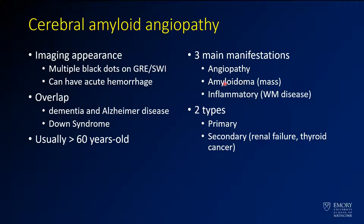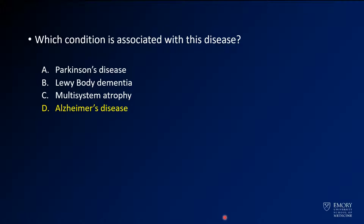You can sometimes see patients that get mass-like amyloidomas, though it's not really that common. There's also an inflammatory component, in which you'll see amyloidosis but with a much more aggressive-looking encephalitis — a much more acute-looking process. You can get primary amyloid disease, or you can also get it secondary to other conditions such as renal disease. As mentioned, this condition is also associated with Alzheimer's disease.